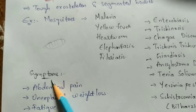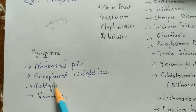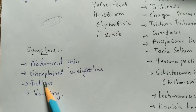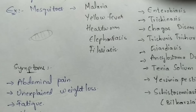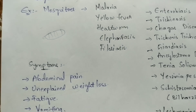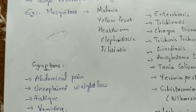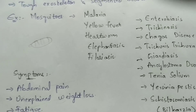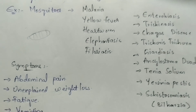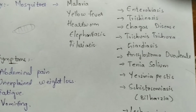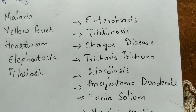Symptoms seen in a person infected by arthropod parasites include abdominal pain, unexplained weight loss, fatigue, and vomiting.